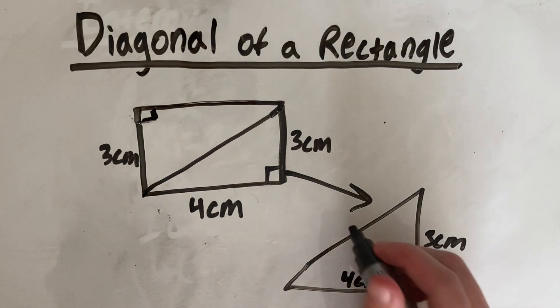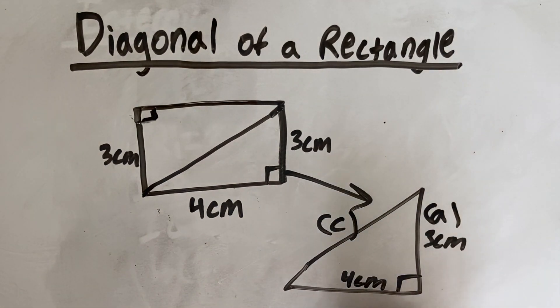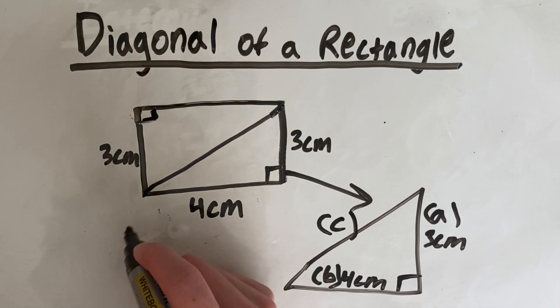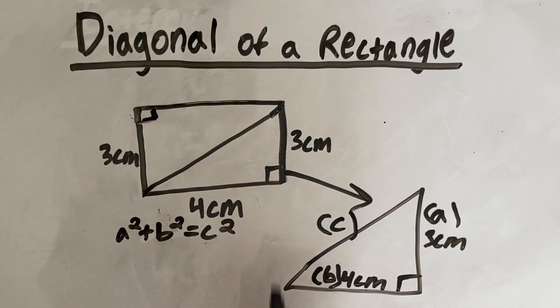Now I'm going to label these sides. This side I'm going to label C. I'm going to label this side over here A and this side down here B. And that's because using Pythagoras Theory, we use the formula A squared plus B squared equals C squared.